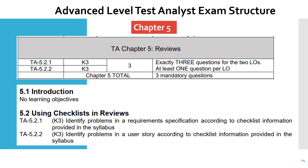Coming to chapter five, there will be three mandatory questions from the chapter on reviews. The questions would be: you will be given requirements and told to identify problems from the given requirement specifications. There will be a checklist given to you and you need to compare whether the checklist items are present in the requirements specification. Also, there could be a user story given to you where you need to find problems in that user story.